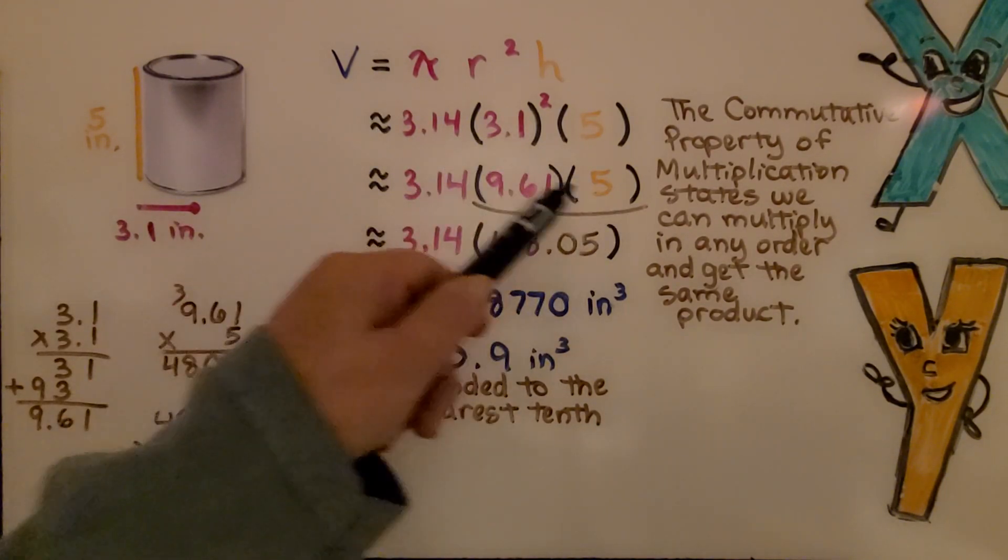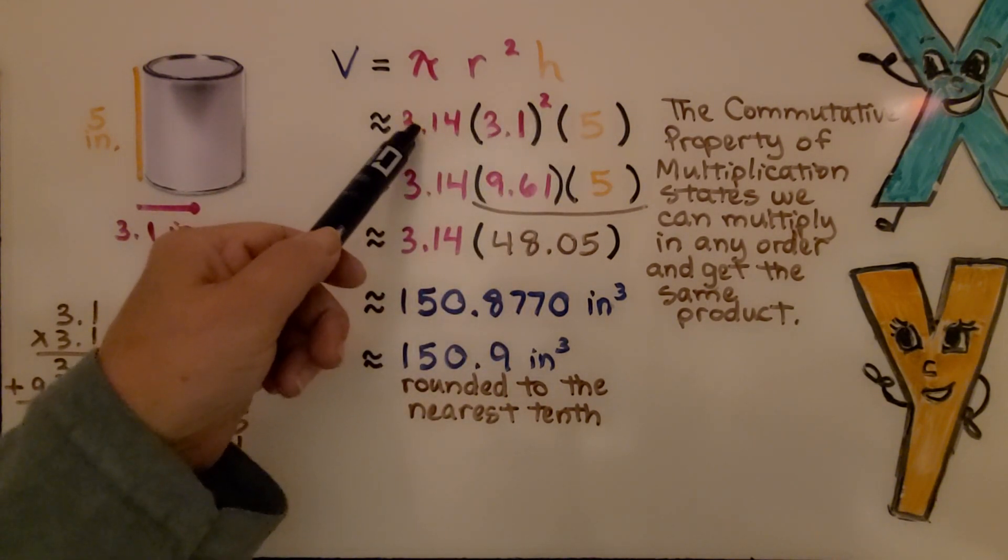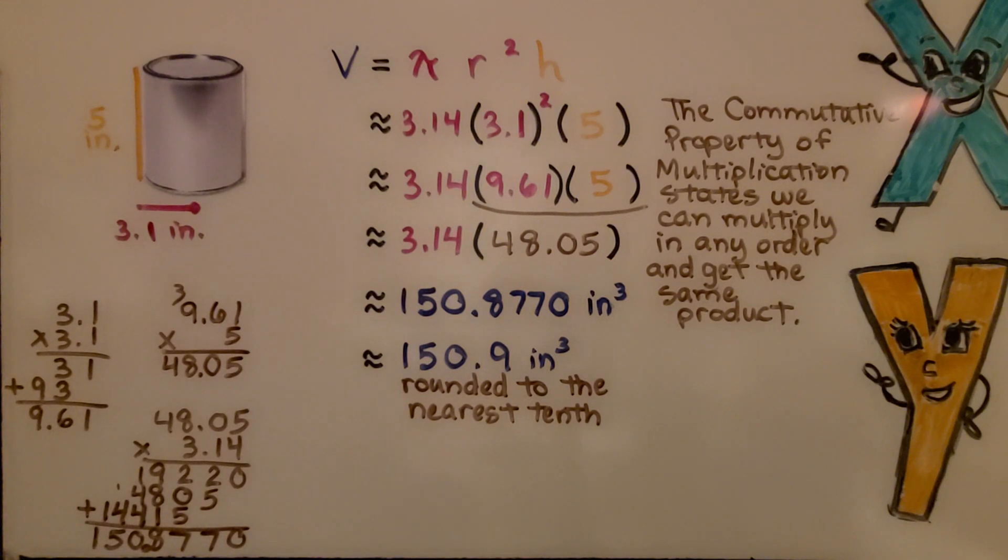It doesn't matter what order we multiply these in. We could even do 5 times 3.14 and then multiply it by the 9.61. We'll get the same product.